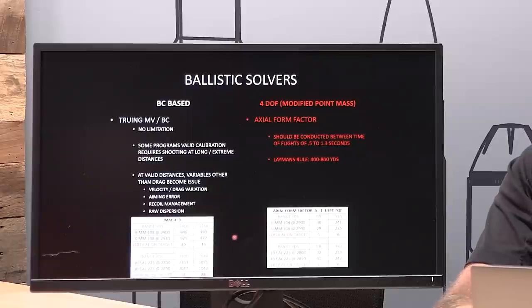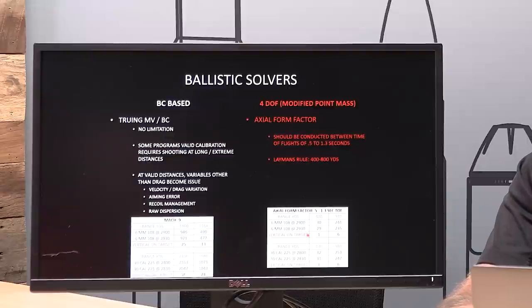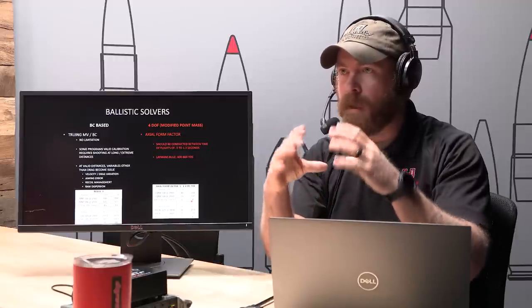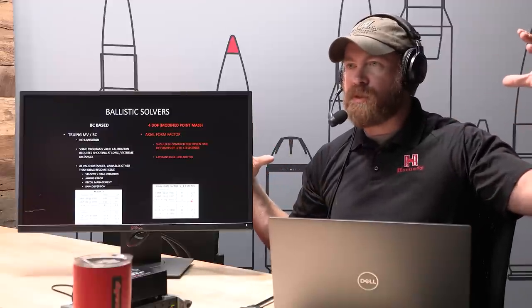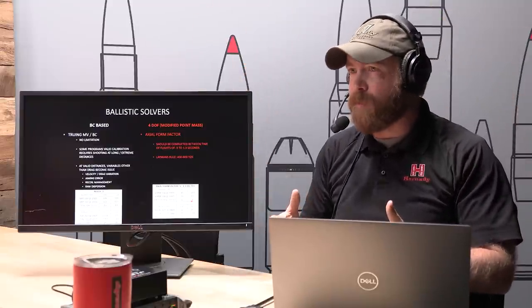Let's compare that method to what's going on with BC truing. If we look at 0.5 to 1.3 seconds with a 6 Creedmoor, you're doing your axial form factor between 420 and 920 yards. At 420 yards, that 30 fps of velocity spread — the same thing we were comparing before — is worth just one inch of vertical. In comparison to 25 or 13 inches of vertical with the other system. Even if you go all the way out to 920 yards, the upper limit at a 1.3-second time of flight, that's six inches of vertical from velocity. It's a much tighter window, so your group sizes on target are tighter and you can make a more accurate assessment of whether you're hitting high or low.